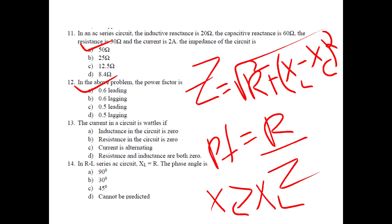The current in a circuit is wattless if the circuit resistance is zero and the circuit angle is 90°. For an RL series AC circuit where XL equals R, the phase angle is 45 degrees.